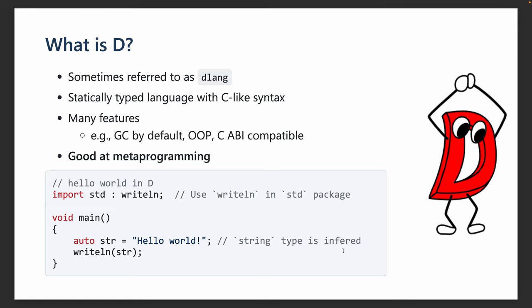So, what is D? It is, of course, a programming language. Here is an example of a parallel world in D. It is sometimes referred to as D-Lang, because the name is too short and hard to search for. It is a statically typed language with C-like syntax, as you can see here. It has many features, such as a garbage collector by default, OOP support, the ability to call C functions directly, and it is good at metaprogramming.